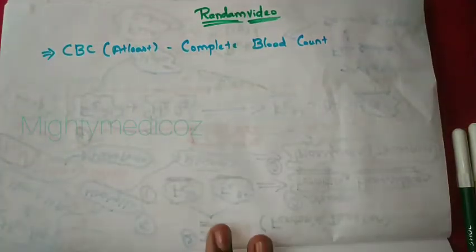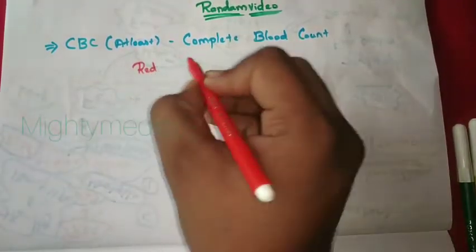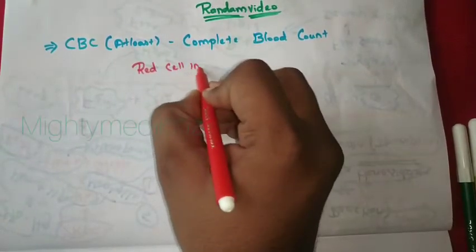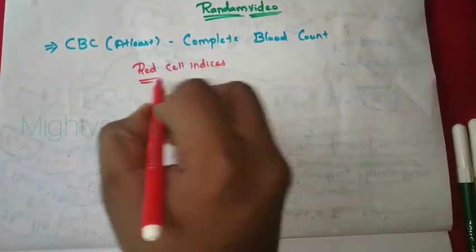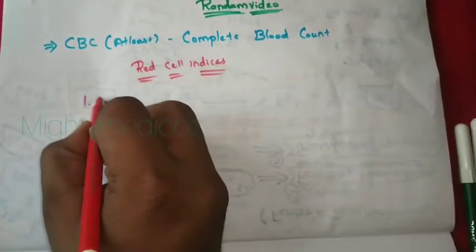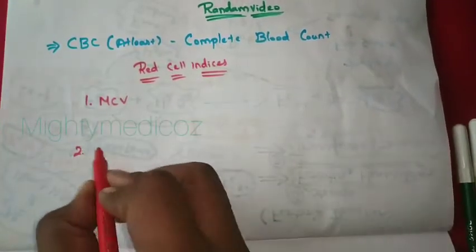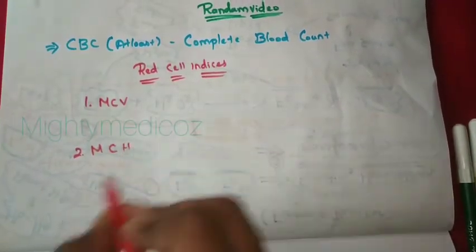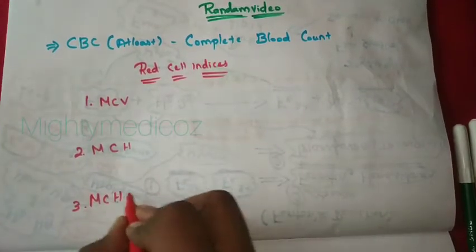There are four main topics. The first is Red Cell Indices, which has three values: MCV, MCH, and MCHC.